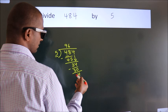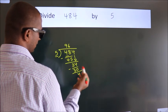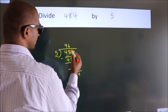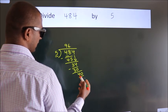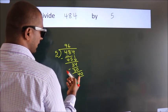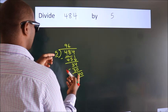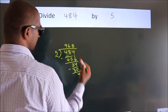After this, there are no more numbers to bring down. So what we do is put a dot and take 0. So, 40. When do we get 40 in the 5 table? 5 times 8 is 40.